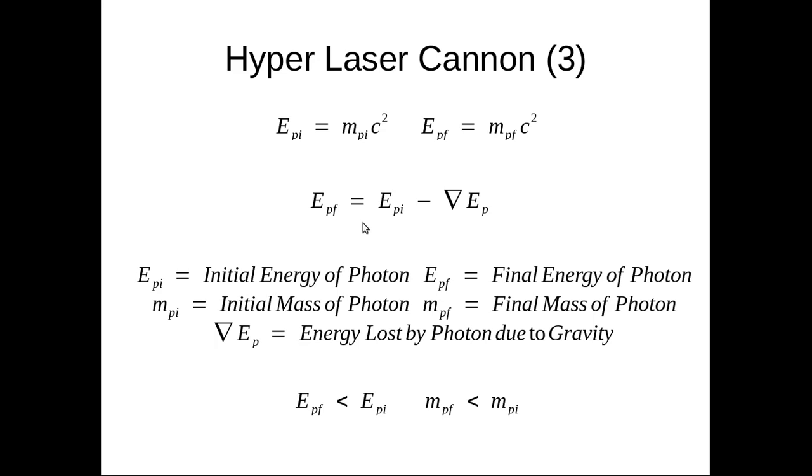We have the same instance here where the photons leave the hyper laser cannon. They have an initial energy Epi, and after it has escaped the gravitational pull of the large massive object it has lost an energy of delta Ep, which is the energy lost by the photon due to gravity, and we get the final energy of the photon Epf.